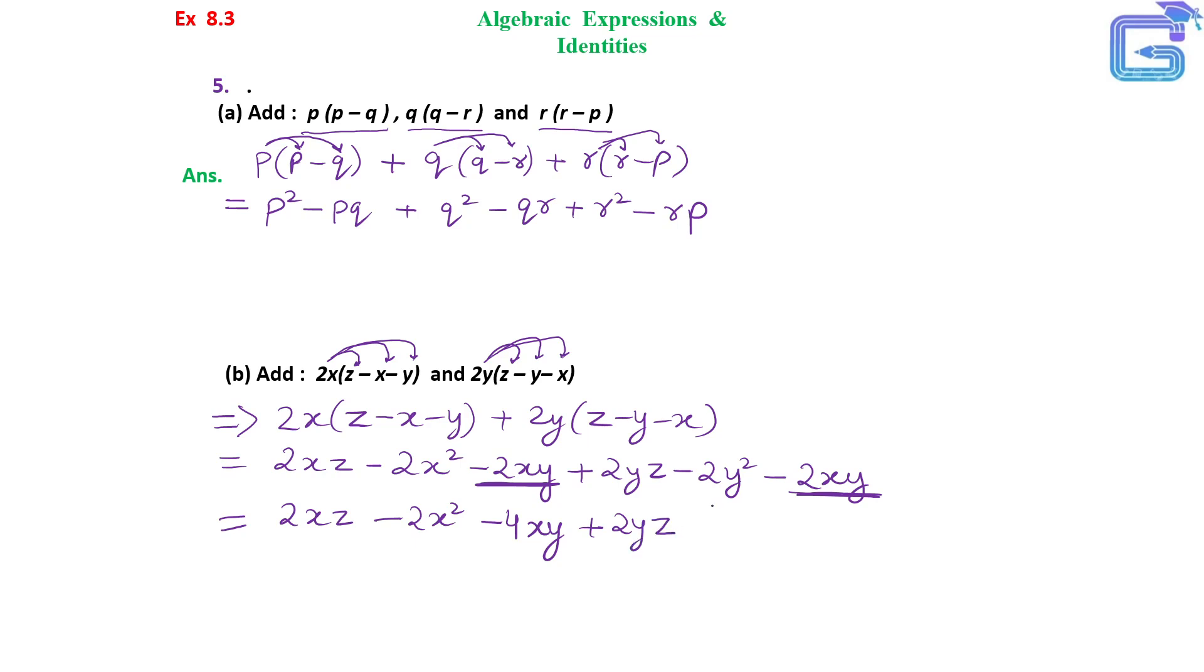2yZ is the only term in YZ and Y square is the only term in Y square, so minus 2y square. This is the final solution for this addition.